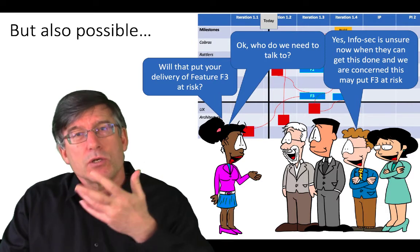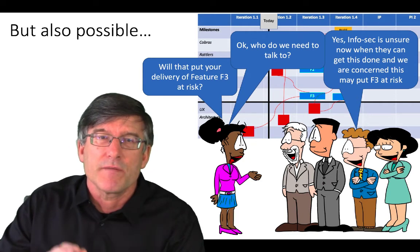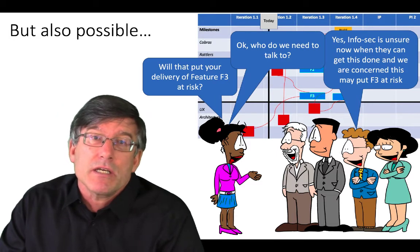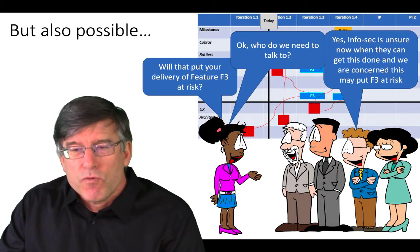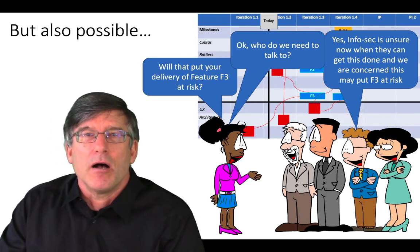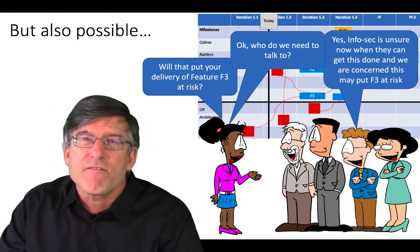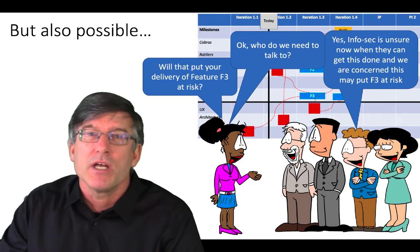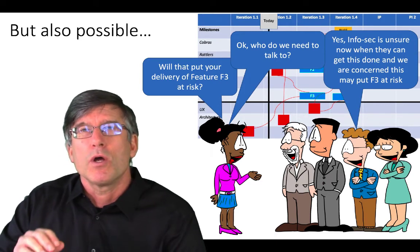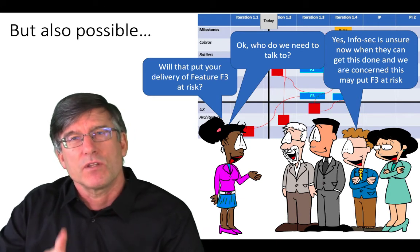The question now is: who do we need to talk to? We're able to start the problem-solving mechanism and call attention to this problem. It is far too easy to pretend that we're getting behind but will get caught up. This way, we're able to use the program board as that big visible information radiator to tell us there is a problem developing in the execution of the PI — giving us that last chance to see and address it.